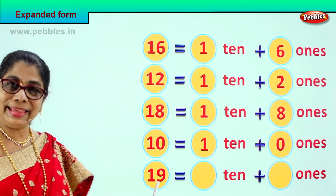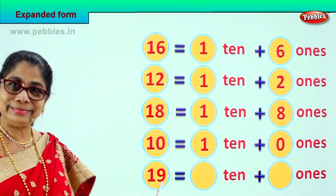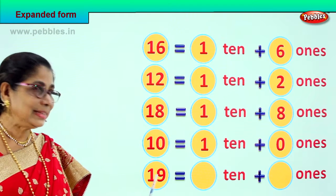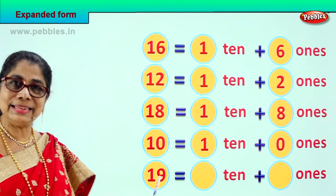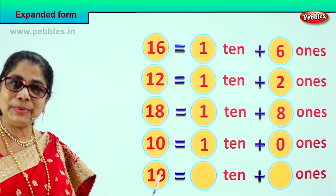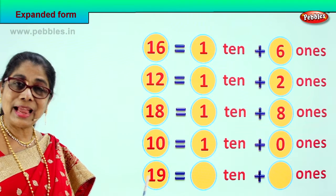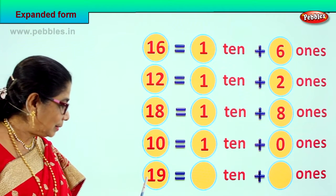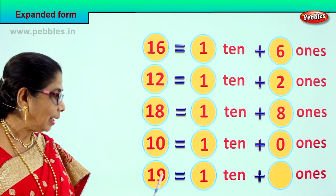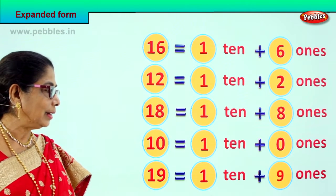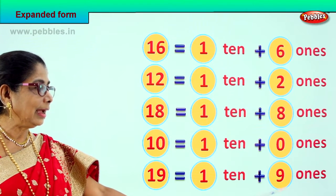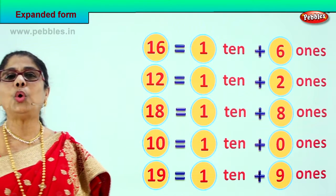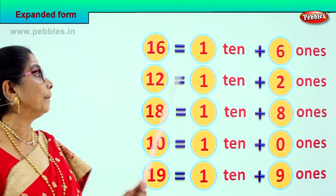And here — look. 19. How many tens? How many ones? You have 1 ten and 9 ones. 1 ten, 9 ones. Just look at all of them now.